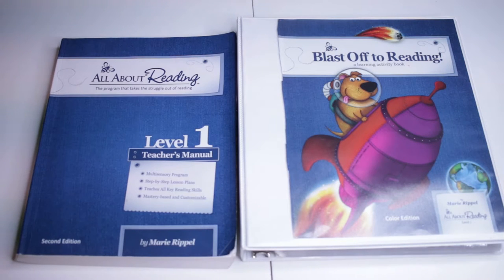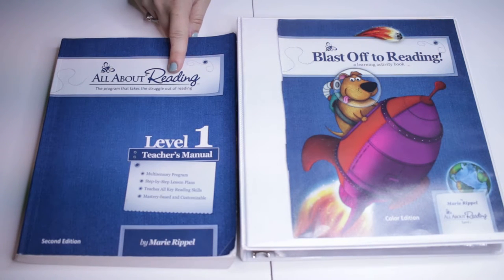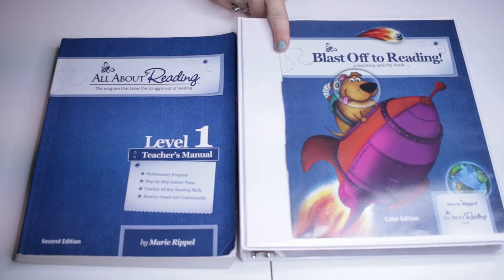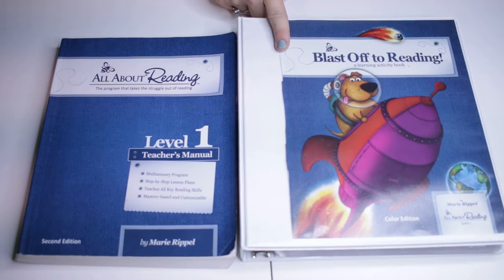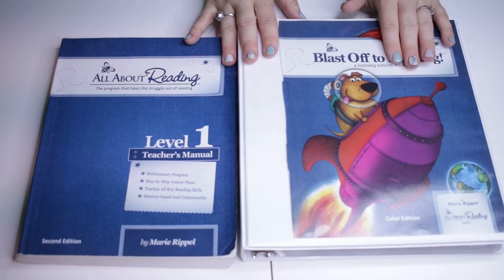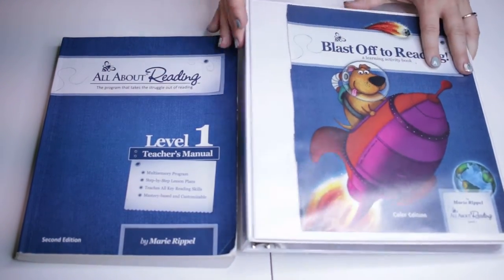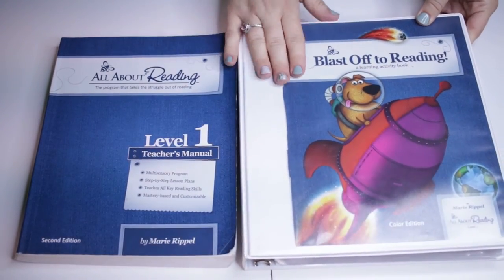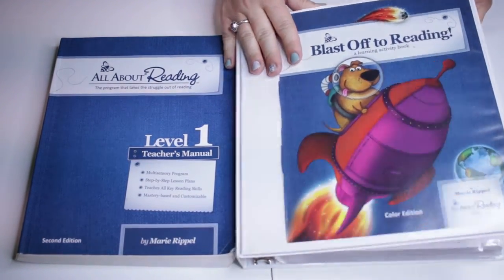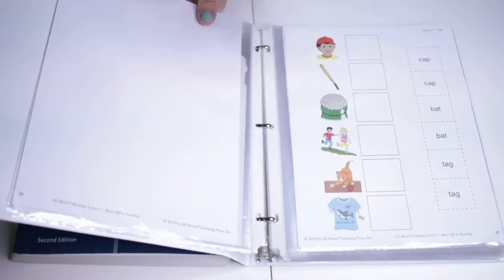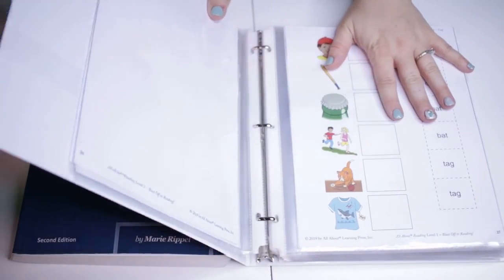All right, let's go ahead and get started. In this video we will be going over the teacher's manual and the student learning activity book. Now keep in mind I have taken apart the activity book and put it into a binder, so all of the information is still the same, all the pages are still the same, they are just inside of here.